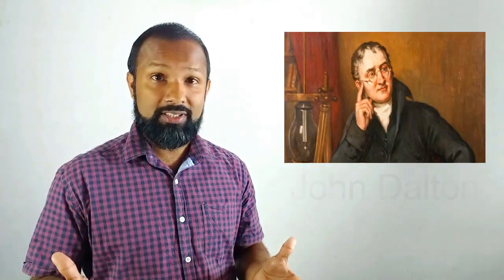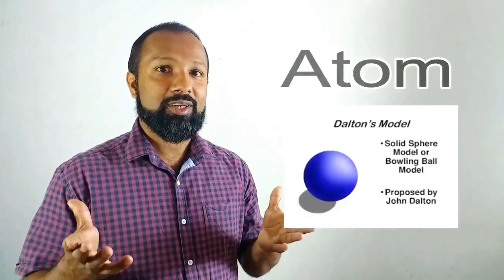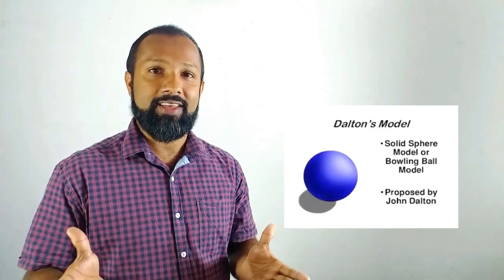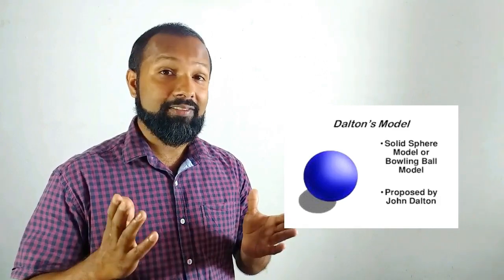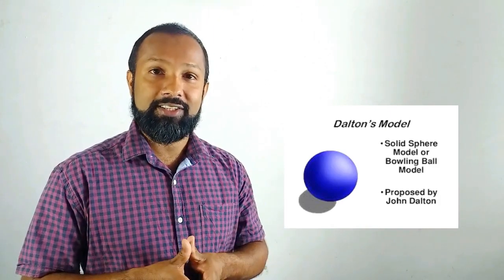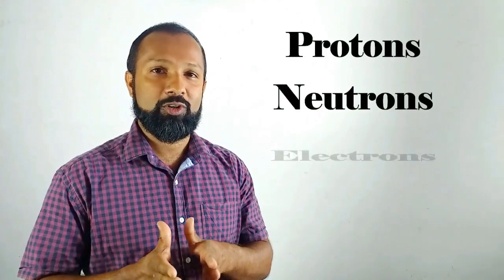Matter is composed of particles that cannot be observed by the naked eye or even by a powerful microscope. Greek scientist John Dalton was the first person to use the term 'atom' to describe the smallest particle. He said these particles are indivisible, but later modern scientists discovered that atoms can be divided further into subatomic particles called protons, neutrons, and electrons.